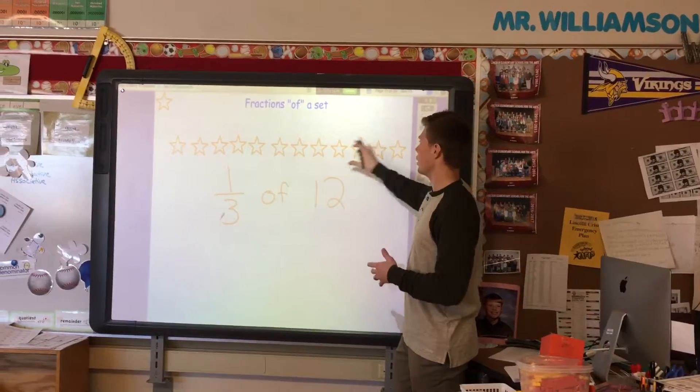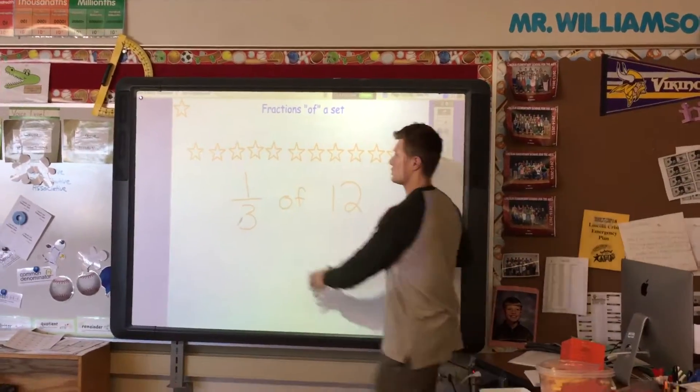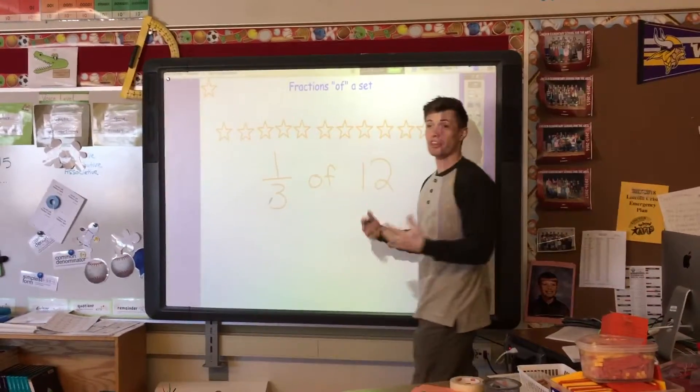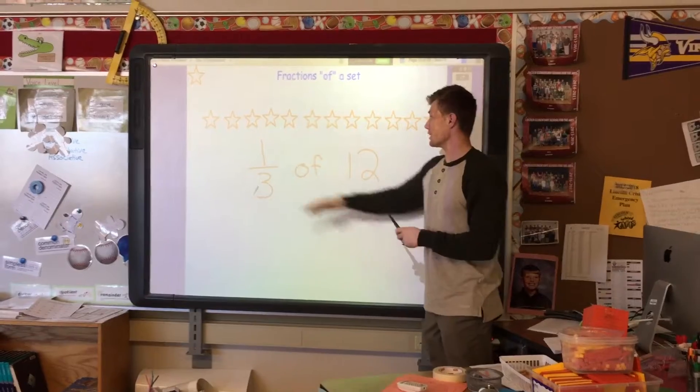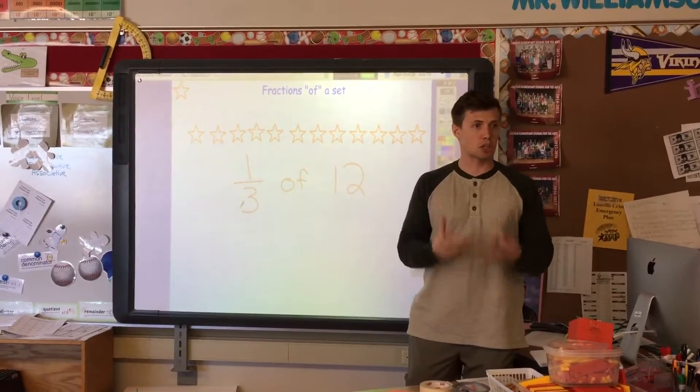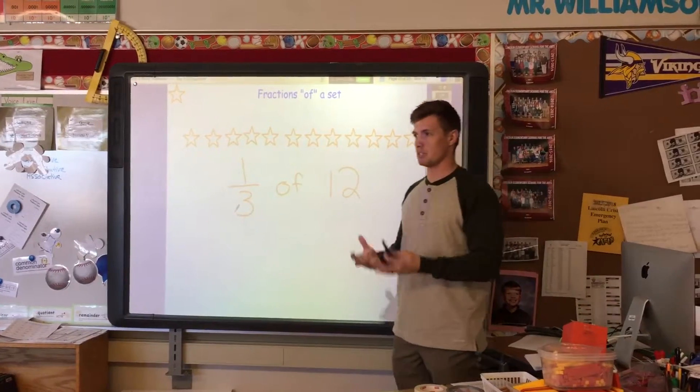Today we're looking at a set of 12 stars. That means there's a total of 12 stars up here and I want to just find one-third of them. So if we think about one-third of anything, you're cutting it into thirds. And how many parts is thirds?